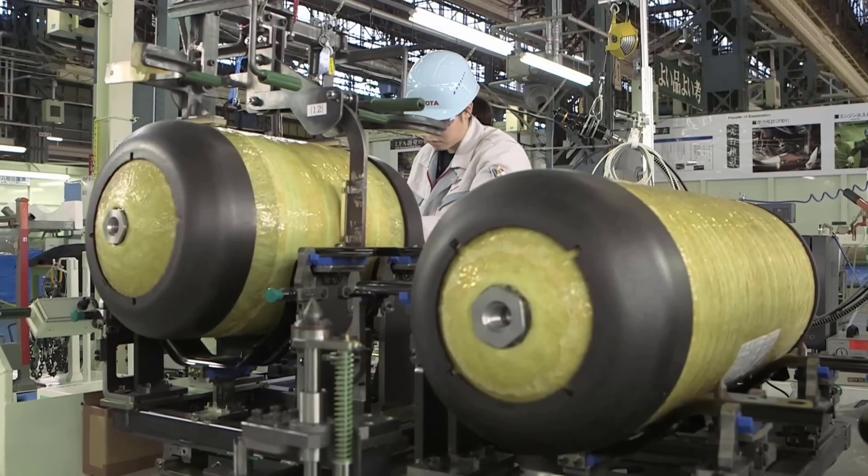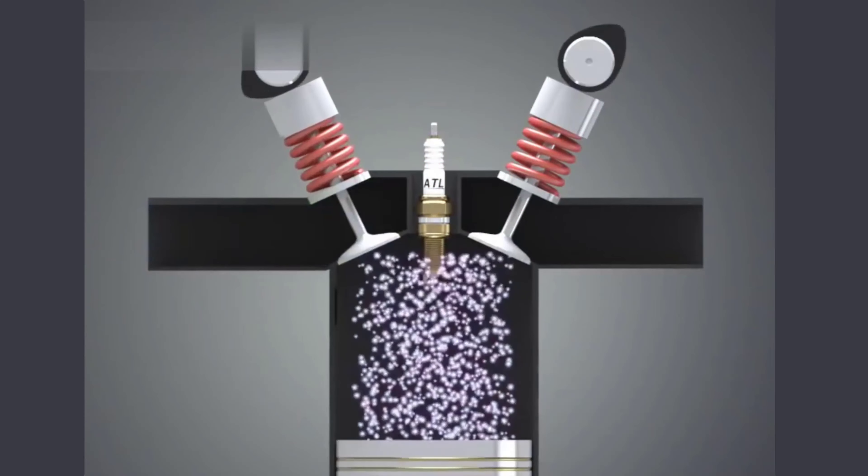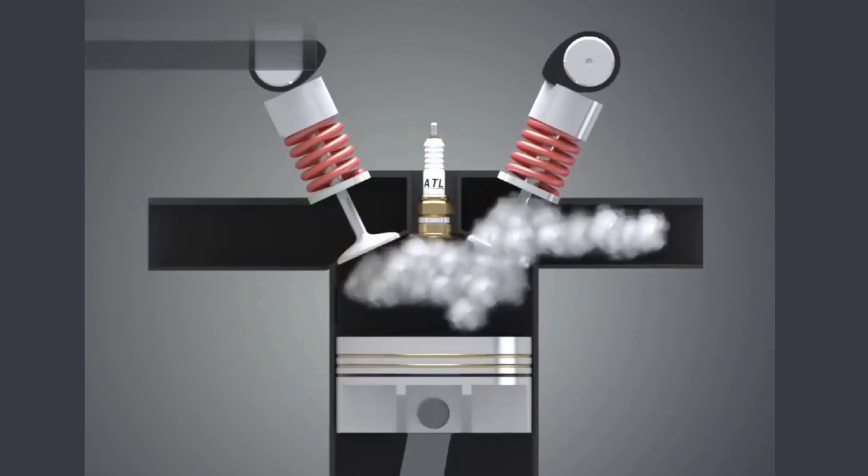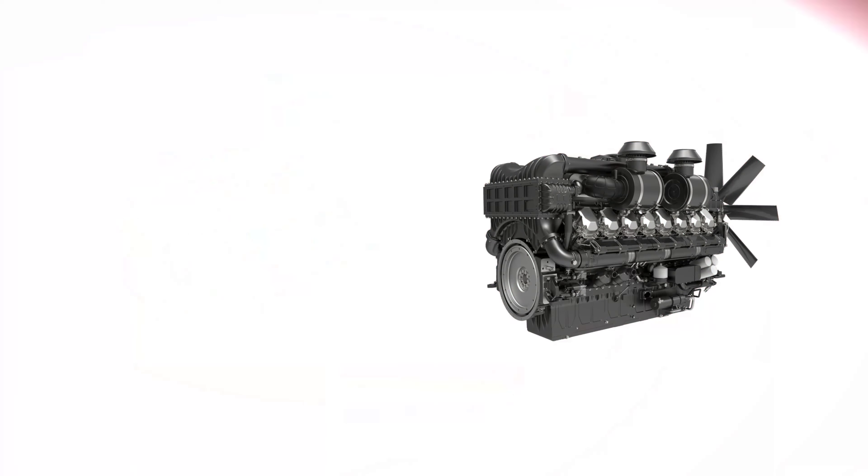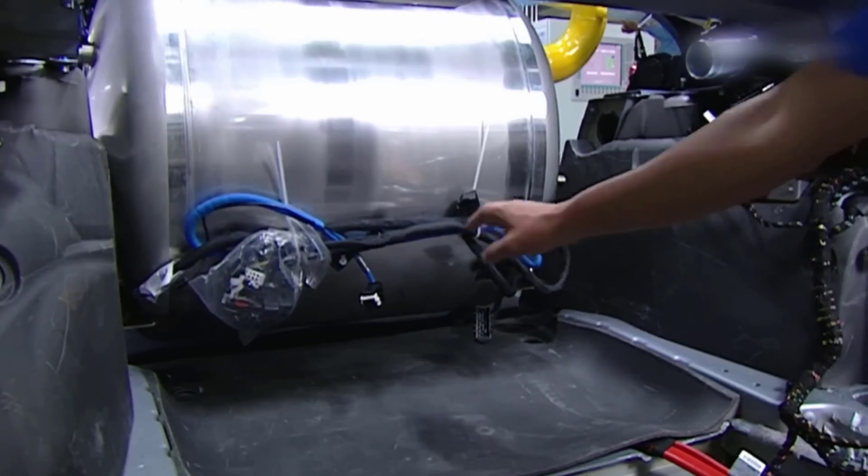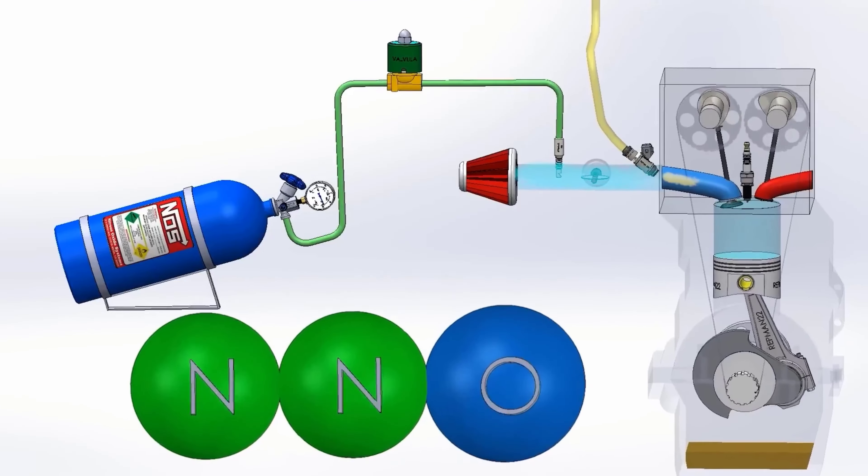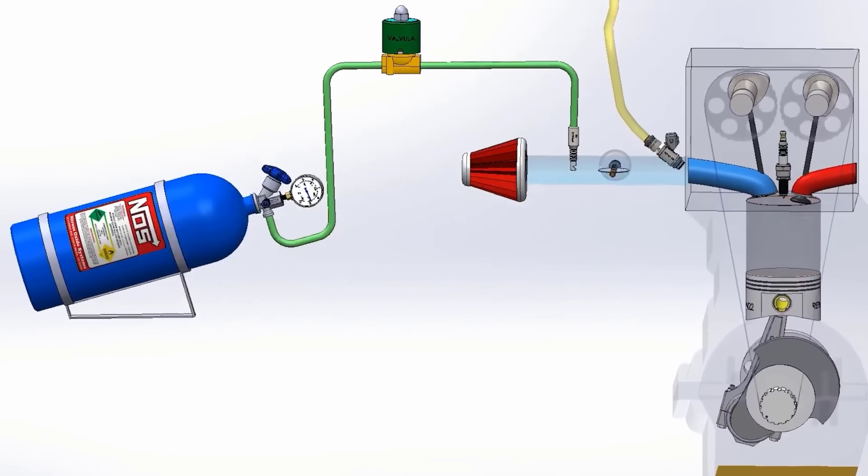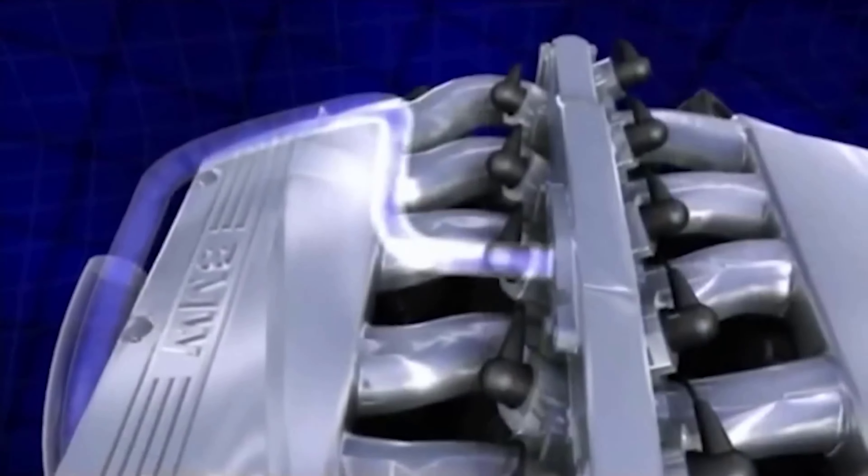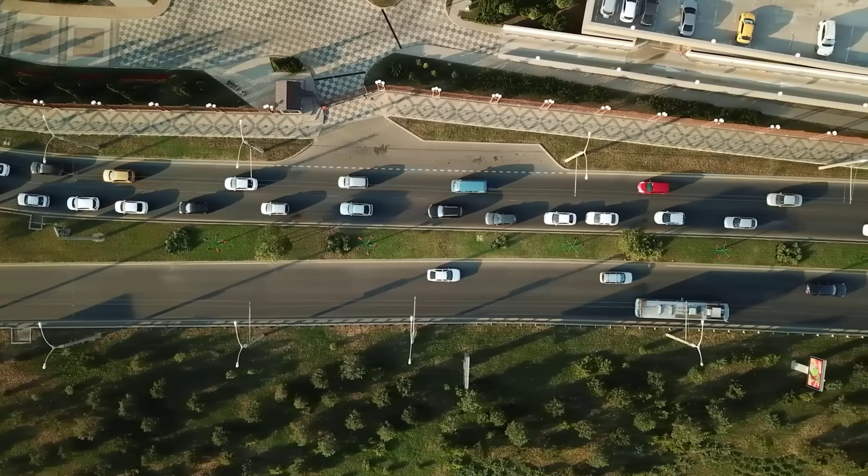A hydrogen combustion engine is a type of internal combustion engine that uses hydrogen as its primary fuel source, similar to how gasoline or diesel engines use their respective fuels. The basic principle behind a hydrogen combustion engine is to mix hydrogen gas with air, ignite the mixture, and use the resulting combustion to generate power and drive the vehicle.